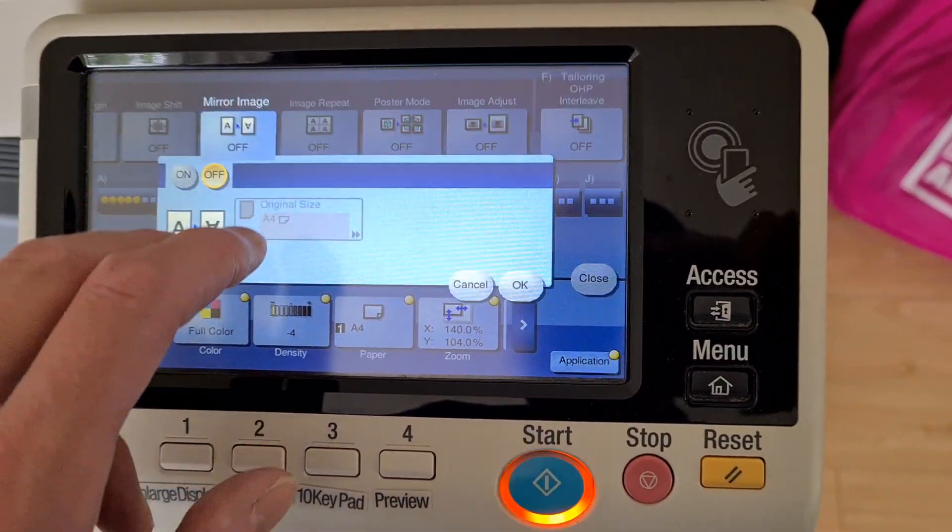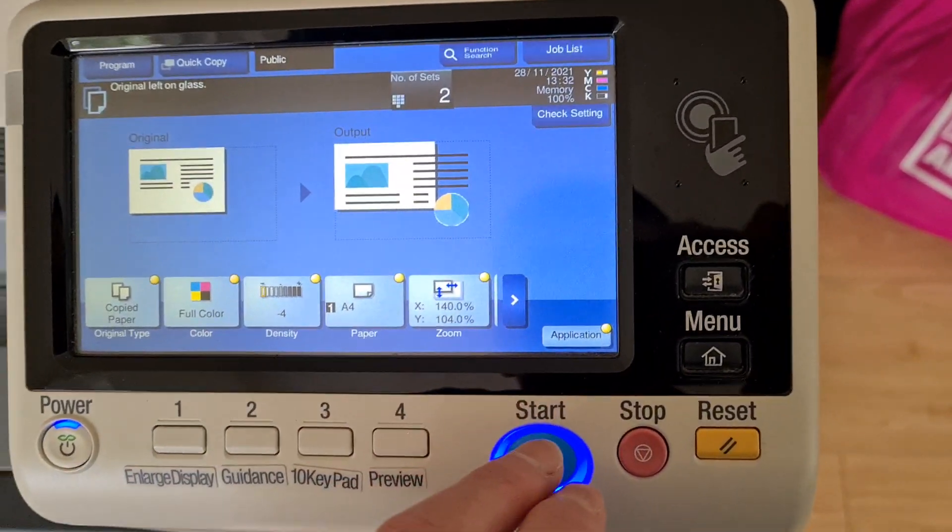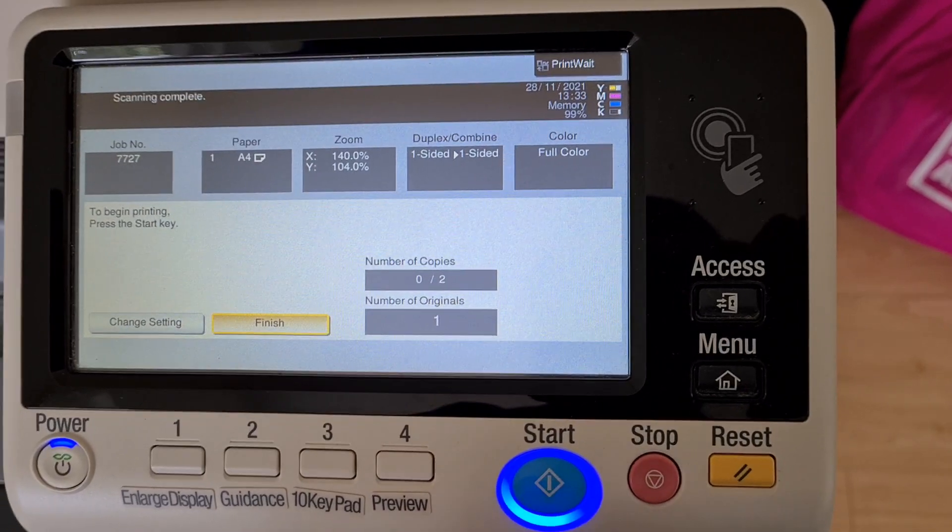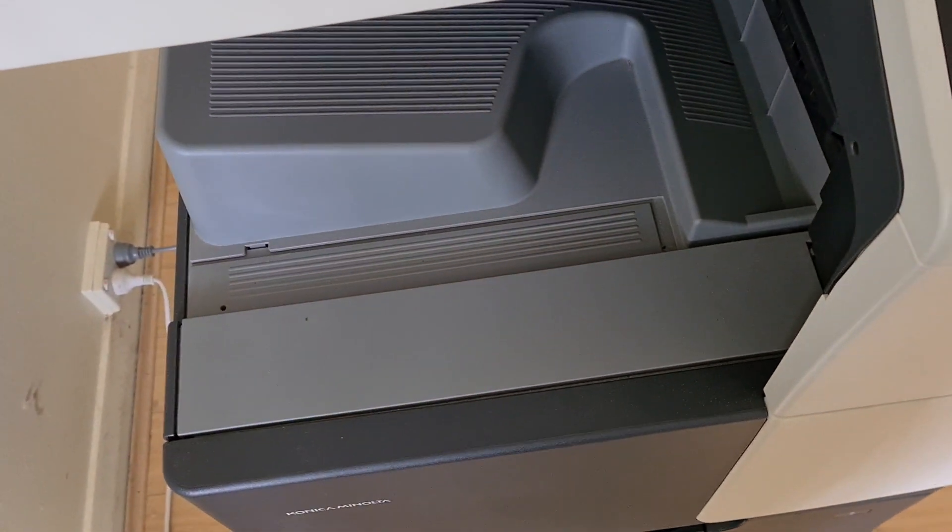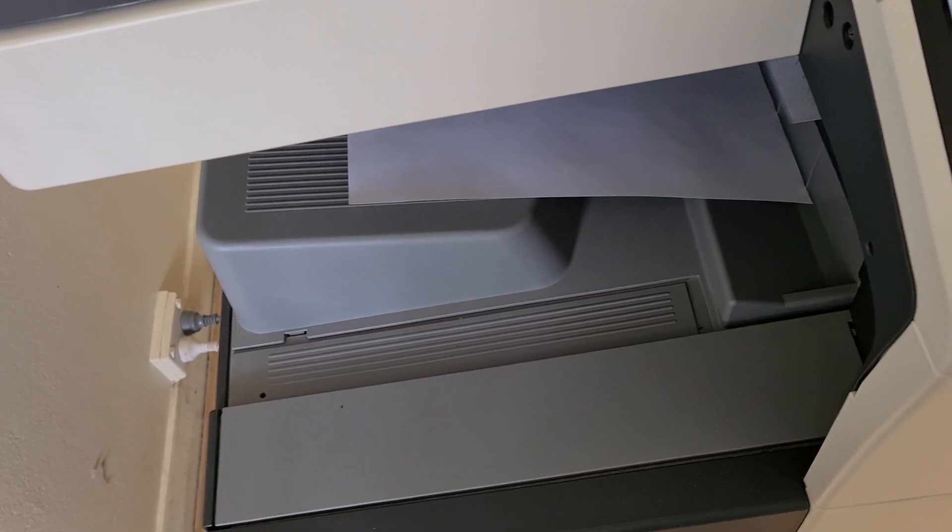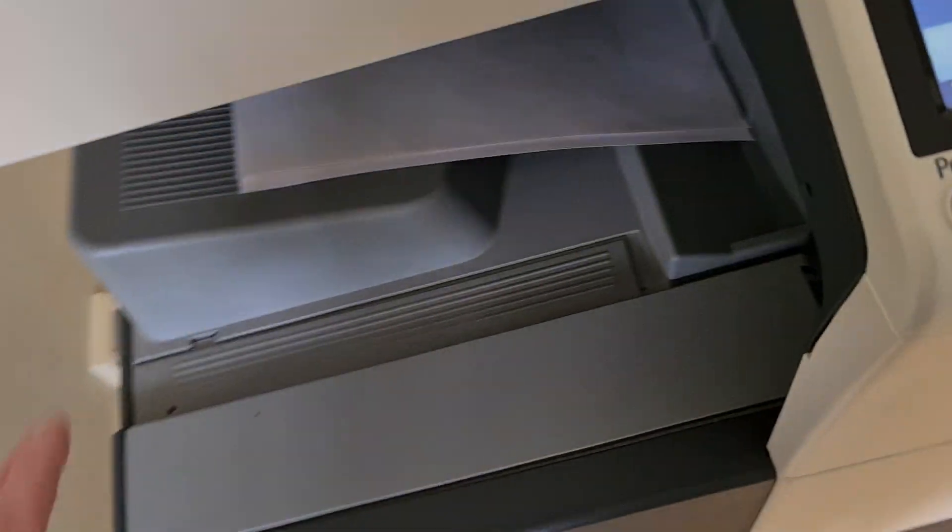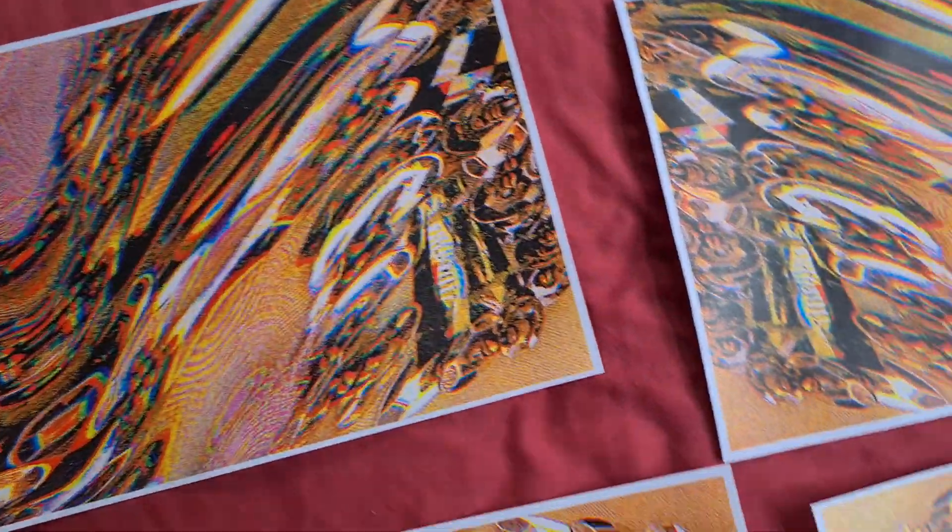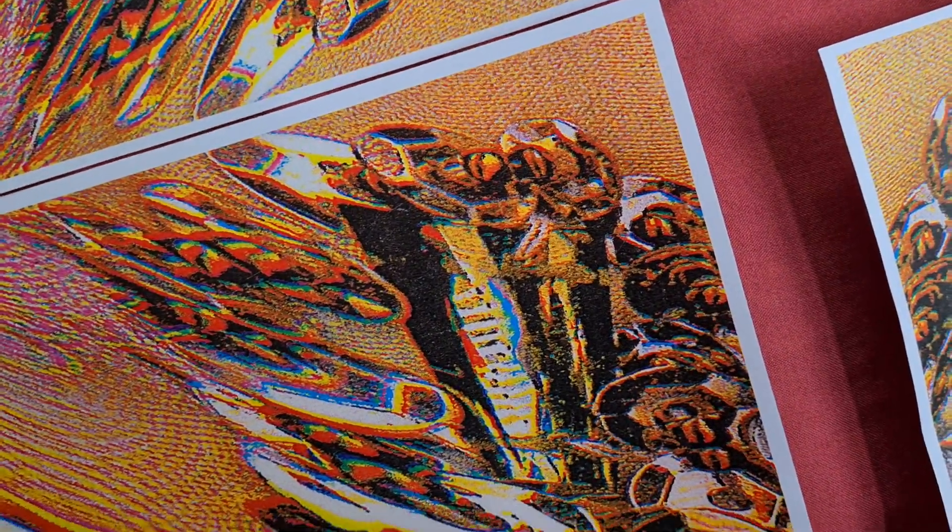I had an old Konica Minolta, it was called the Bizhub C353, and it was already old. But then the machine broke down in 2018 and I had to take out a bank loan and get this machine because the spare parts could not be guaranteed. Therefore the service agreement was voided and I had to pay for a technician to come and try and fix it without the spare parts or the guarantee. So it wasn't worth doing that, so I had to just get a bank loan and get this sucker. So basically, yeah, it really sucks.